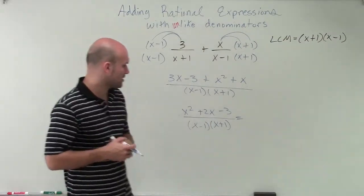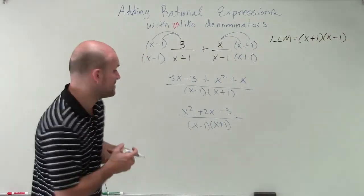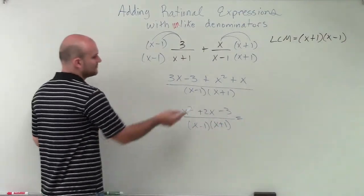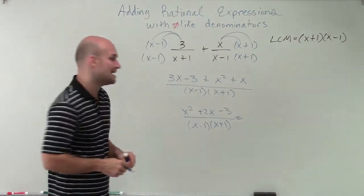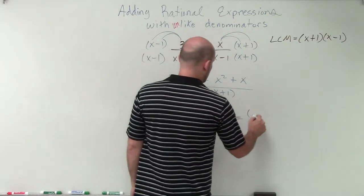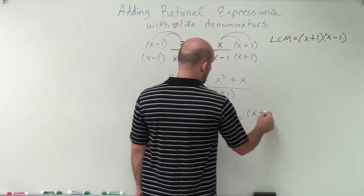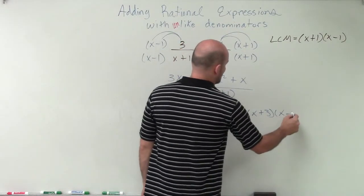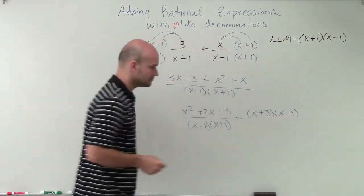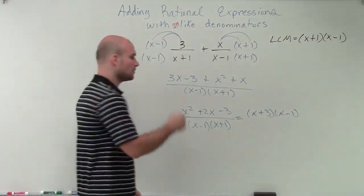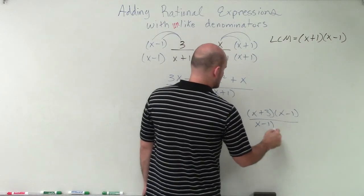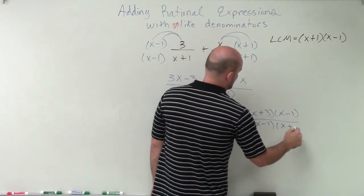So therefore, I want to be able to factor x squared plus 2x minus 3. And I'm just going to use this by inspection and say what two numbers multiply to give me negative 3, but then add to give me a positive 2. Well, therefore, I could say this can be in factored form of x plus 3 times x minus 1, right? And you can double check my work by applying FOIL. Then we have x minus 1 times x plus 1.